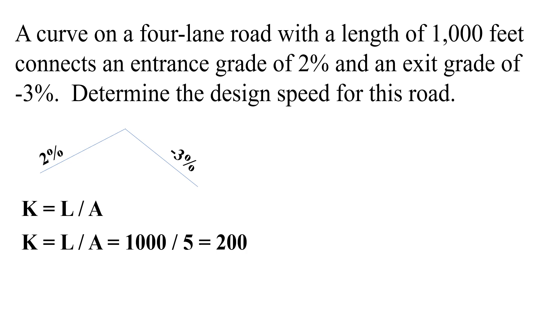We're going to plug in the values that we were given. So we have a thousand foot long curve. Five is our algebraic difference in grades. So the rate of vertical curvature K is 200. That means that we need to go 200 feet to have a one percent change in grade.